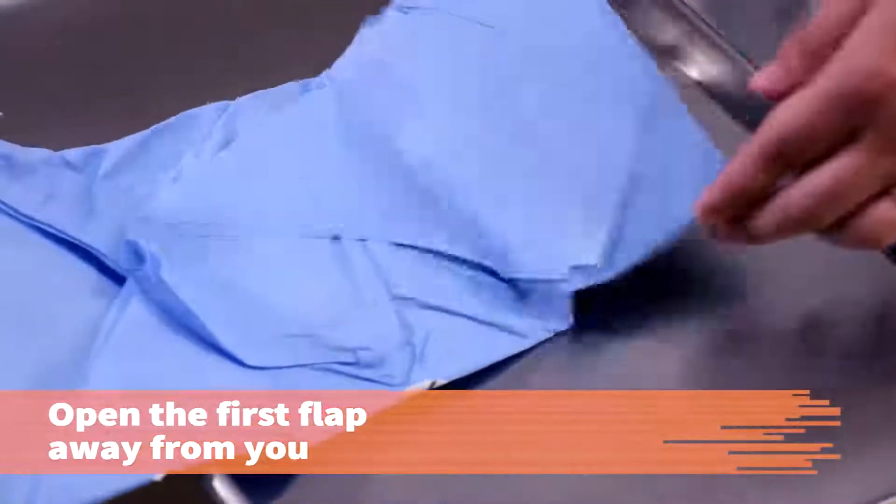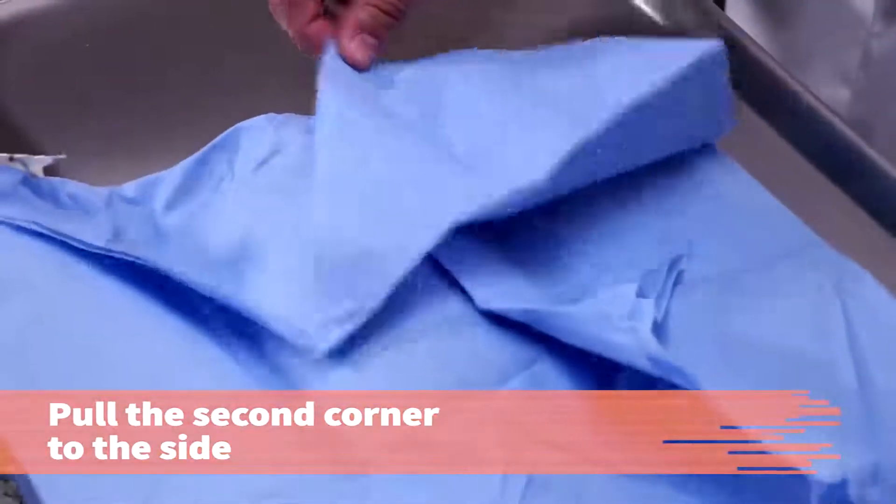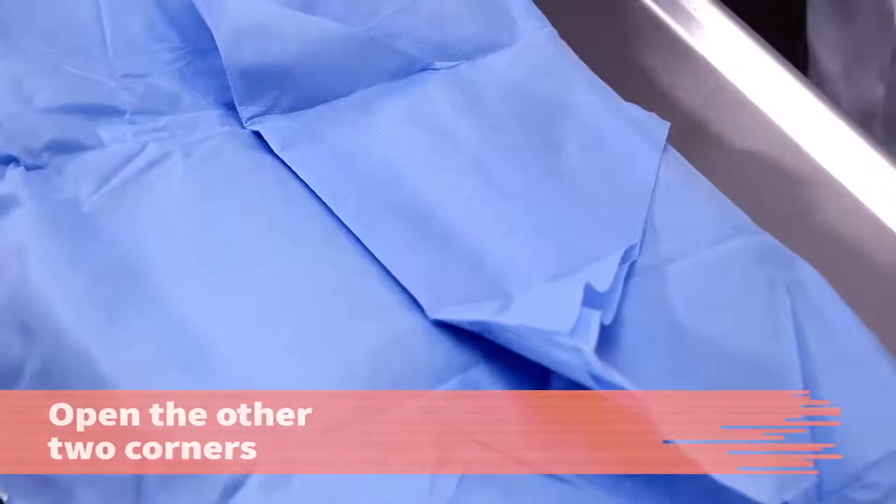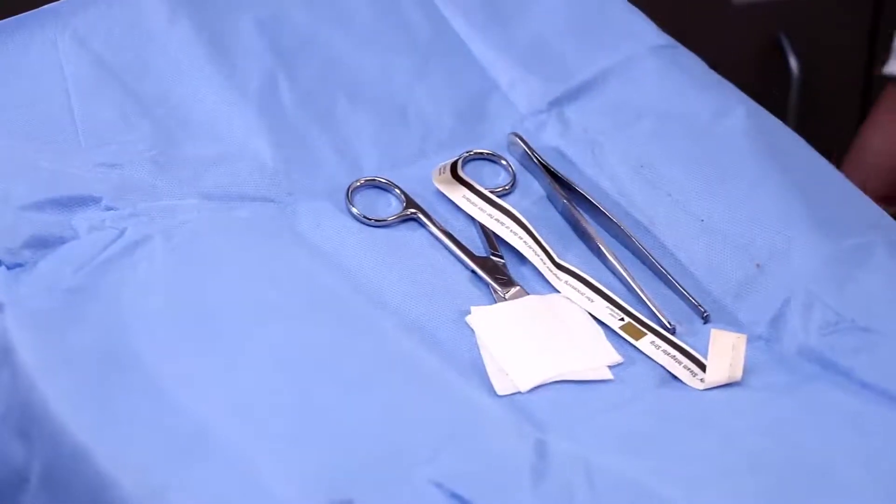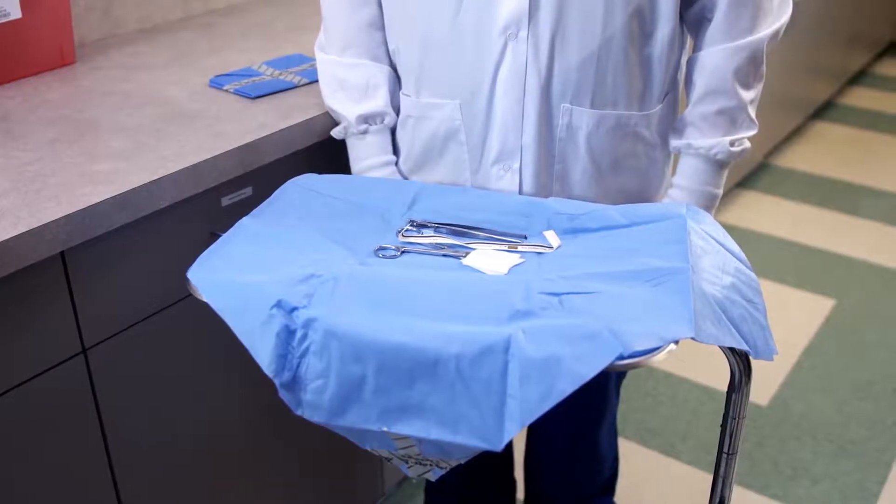To prevent contamination, open the second corner by pulling it to your left side. Open the remaining two corners of the pack. Your sterile drape is now a sterile field from which to distribute supplies and instruments.